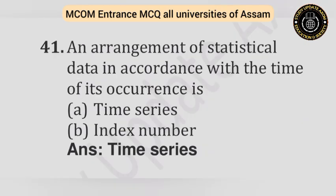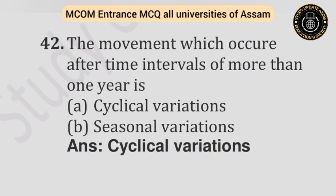Question number forty-one: An arrangement of statistical data in accordance with the time of its occurrences is — Option A: Time series. Option B: Index number. Answer is time series. Question number forty-two: The movement which occurs after time intervals of more than one year is — Option A: Cyclical variation. Option B: Seasonal variation. Answer is cyclical variations.